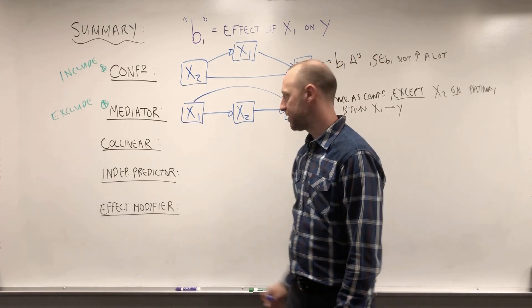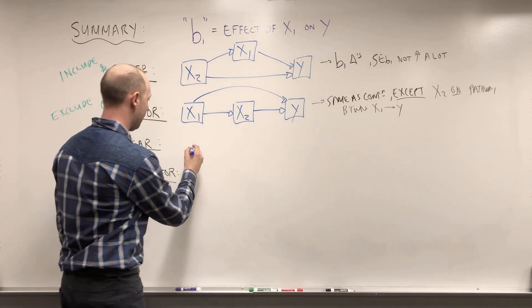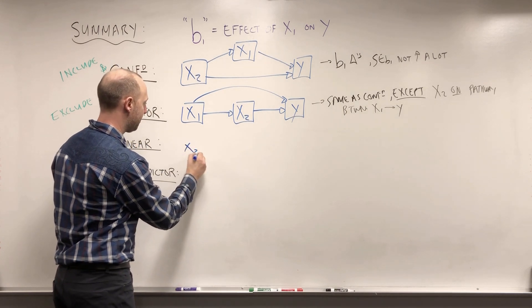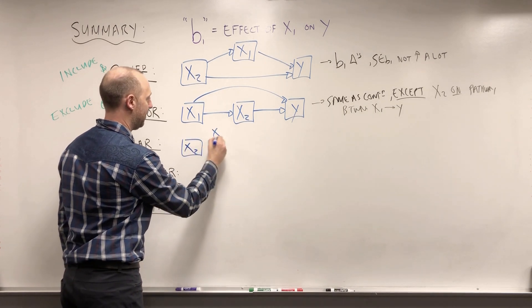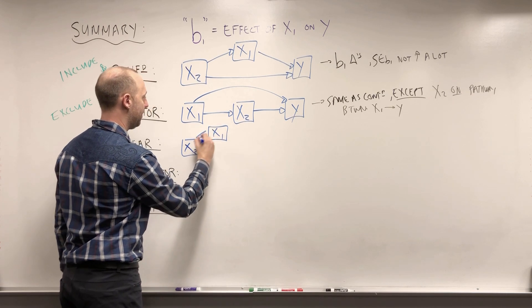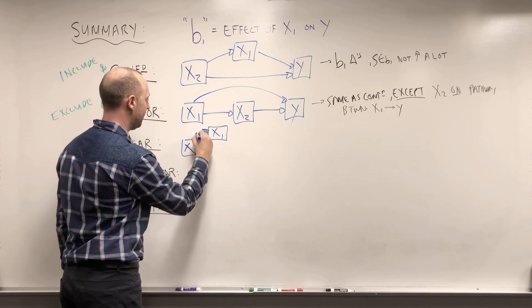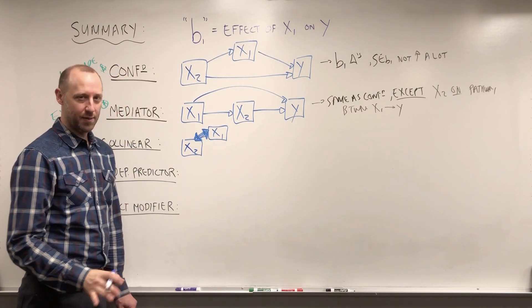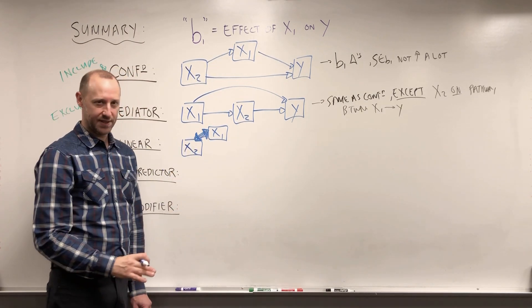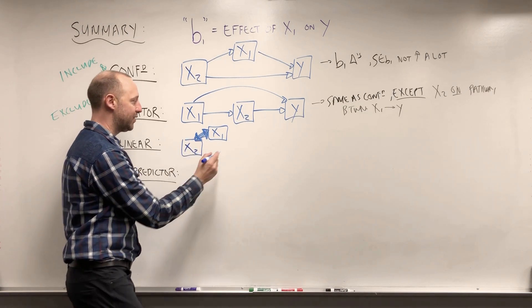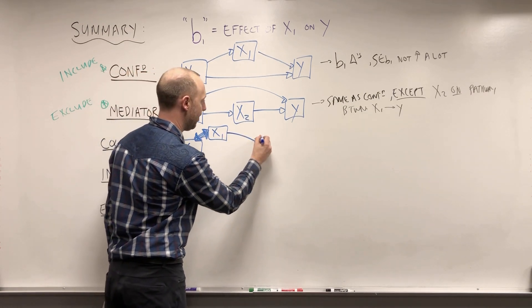Collinear variables, again, are very similar to confounding. We have some variable X2. It's associated with X1. The main difference between collinear and confounding is that these two are so highly associated, we can't really separate their two effects. So in some sense, we can think of X2 as being an alternate measure of X1.